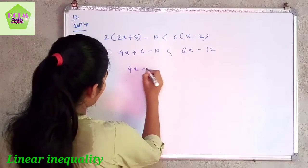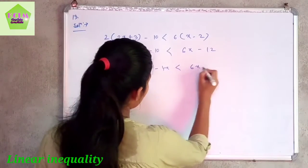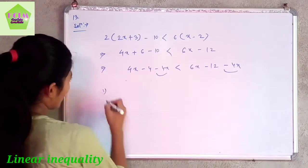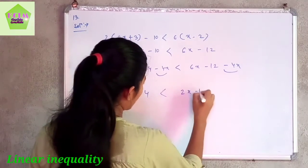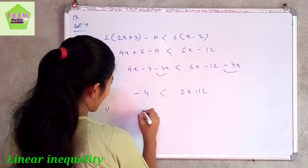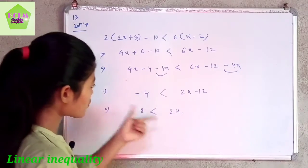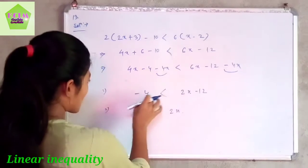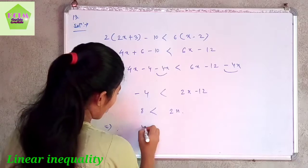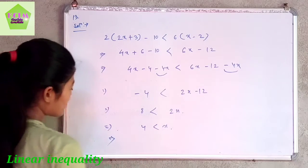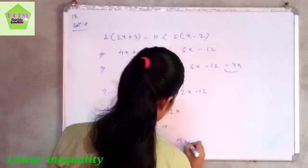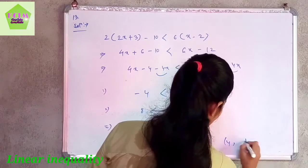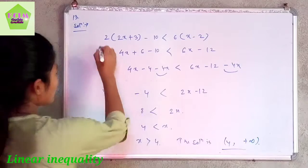Subtracting 4x from both sides gives minus 4 less than 2x minus 12. Adding 12 to both sides gives 8 less than 2x, and dividing by 2 gives 4 less than x — that is, x is greater than 4. For real x, the solution is the open interval 4 to plus infinity. This is the solution for linear inequality question number 13.